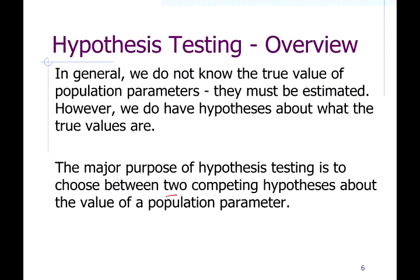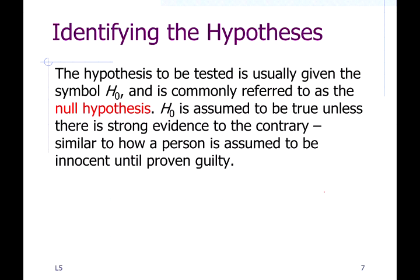There are going to be two competing hypotheses, and we'll use sample data to choose between them. The first hypothesis is like the default — this is what you assume is true unless you have a reason to believe otherwise. This is called the null hypothesis, symbolized as H₀. You can think about it like someone going to court: in this country, a person is assumed innocent until proven guilty.